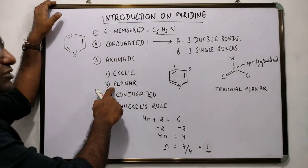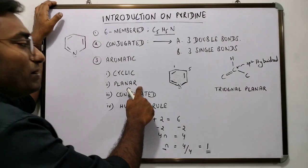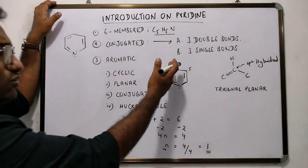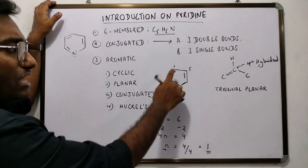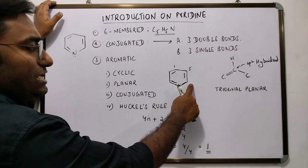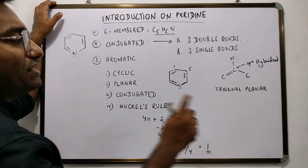Condition number 2: the molecule should be planar. If you look at the structure of pyridine, each of the carbon atoms of pyridine is a doubly bonded carbon atom.